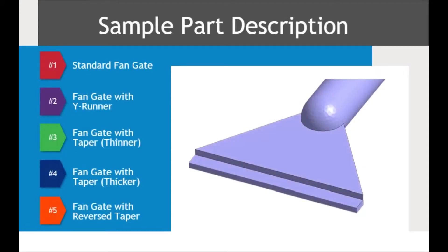Fan gates can be different styles, shapes, or sizes. These differences can influence the polymer flow direction during filling and the pack pressure flow and timing. Flow front behavior is important to observe, since it influences flow hesitations and racetrack effects.